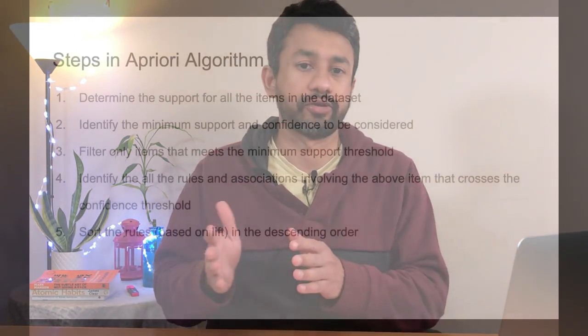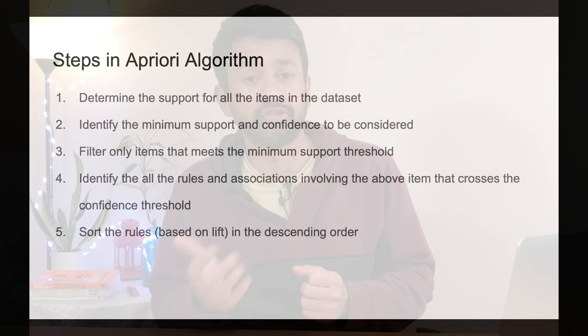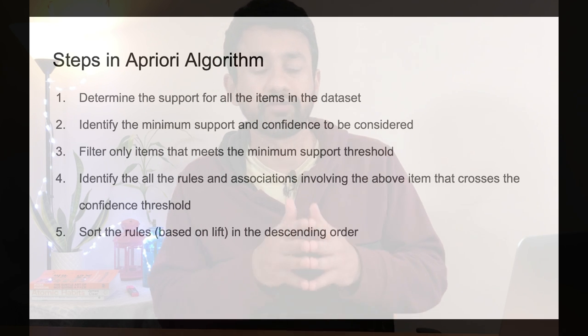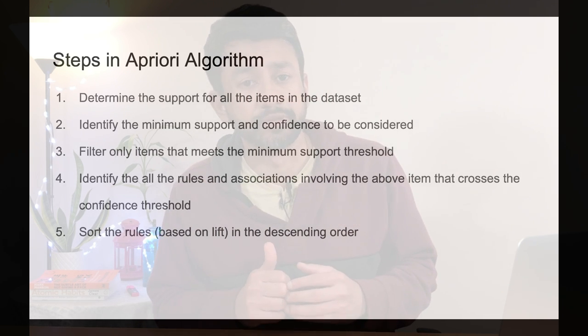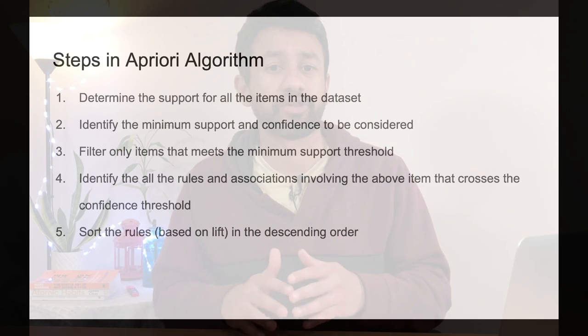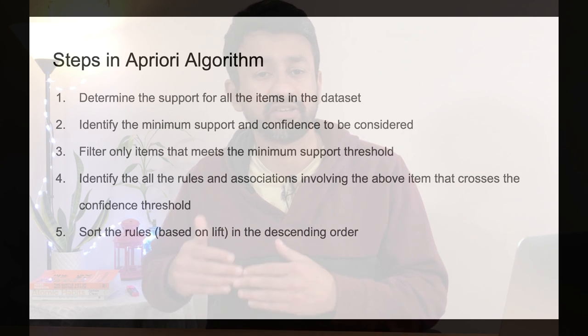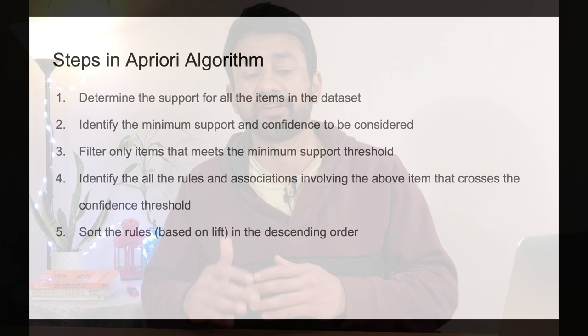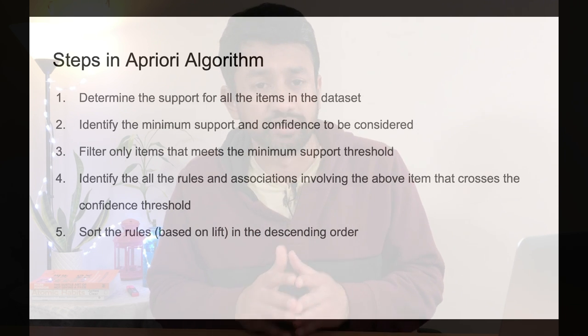Moving on — what are the various steps involved in the Apriori algorithm? The first step is to identify the support for all items in the dataset. The second step is to define a minimum threshold for both support and confidence. The third step is to filter all items that surpass the minimum support. The fourth step is to come up with associations that cross the minimum confidence. The final step is sorting all the rules based on the lift score.